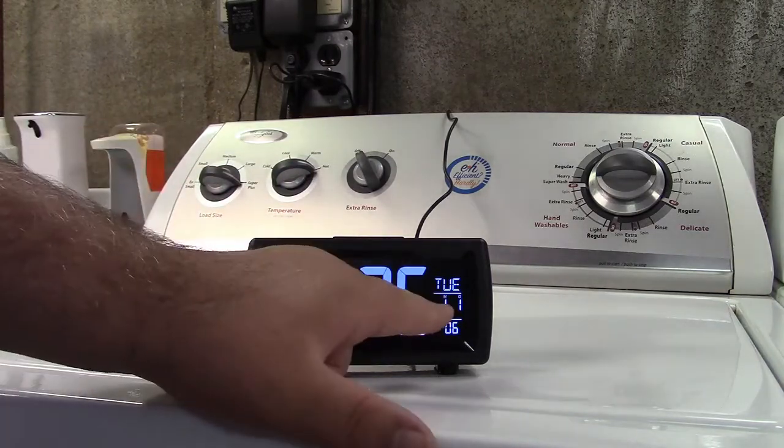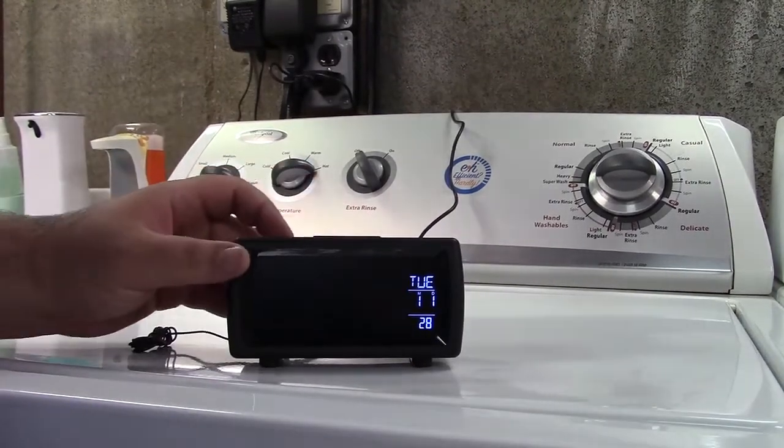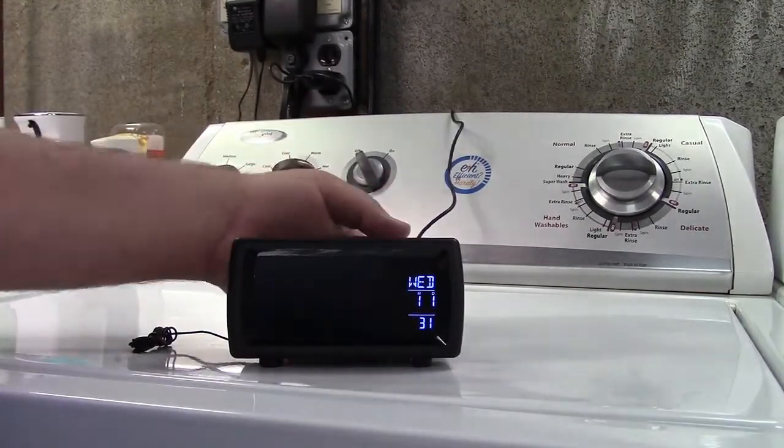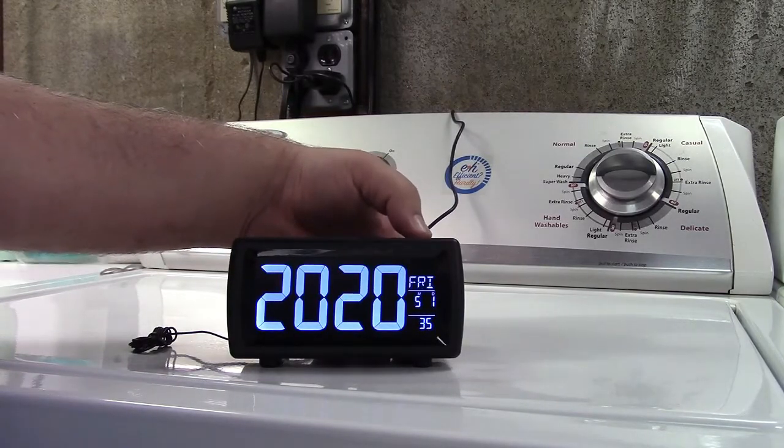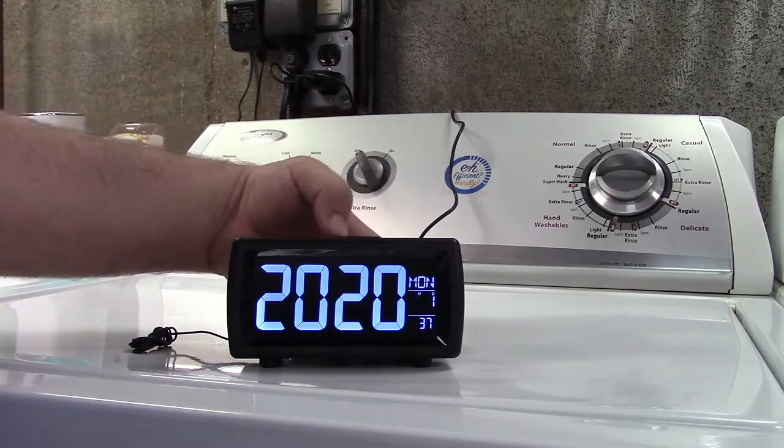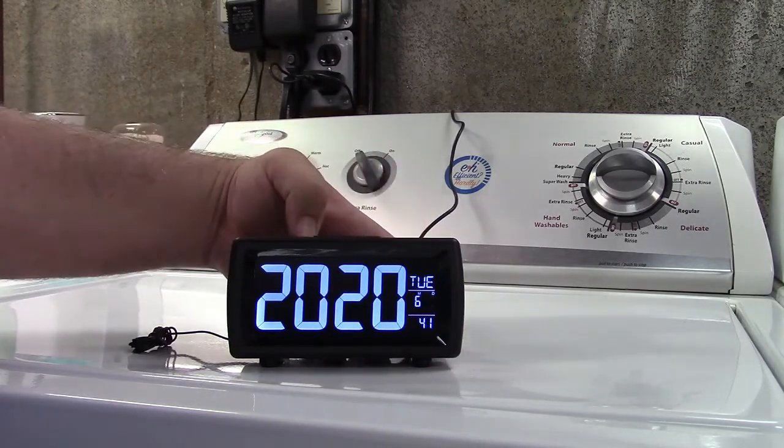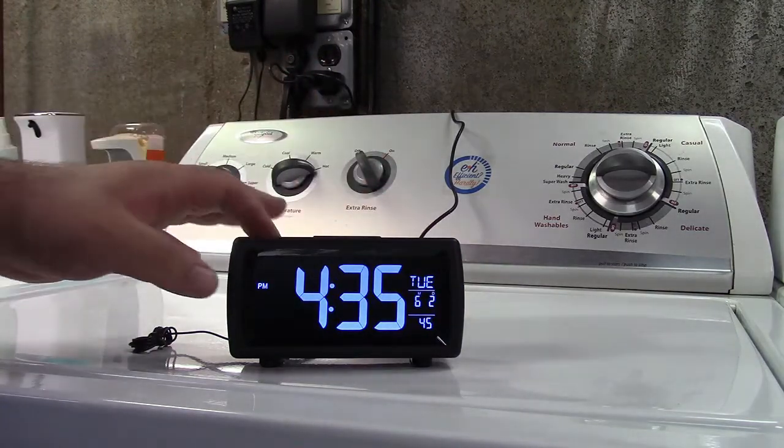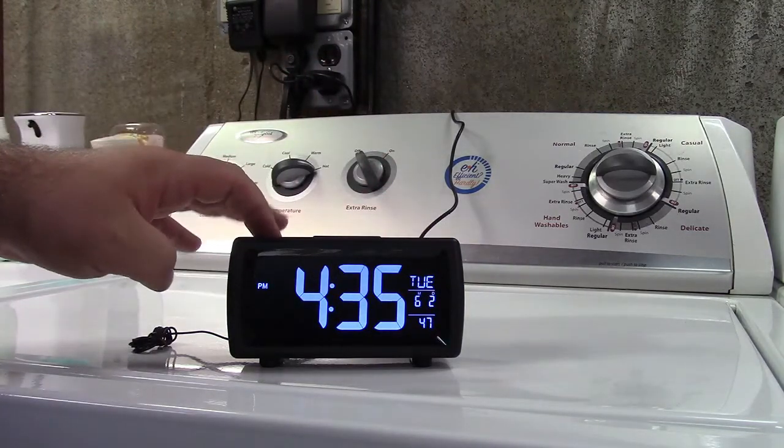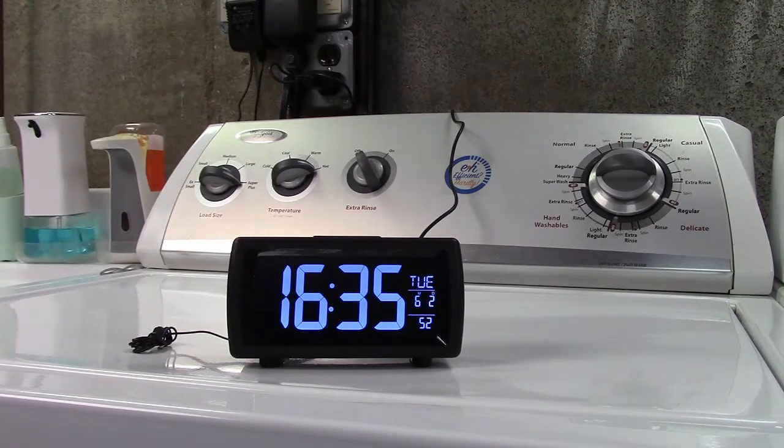You can also set the date. So let me get that set. To do that, there's a weekend button. So you press that, and now you just go through the particular thing. So I think today is the 2nd of June. Like that. And that's it. Now we can press the 12/24 button again quickly, and it will change the 24-hour time. And that's where I'm going to leave it for the rest of the video.